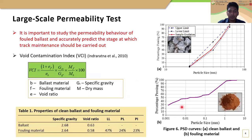Therefore, it is important to study the permeability behavior of fouled ballast and also accurately predict the stage at which track maintenance should be carried out. So in this study, a series of large-scale constant head permeability tests were conducted. For that, it is important to quantify the ballast fouling. There are different indices proposed by various authors to quantify ballast fouling, and in this study the void contamination index (VCI) was used, which is given by this equation.